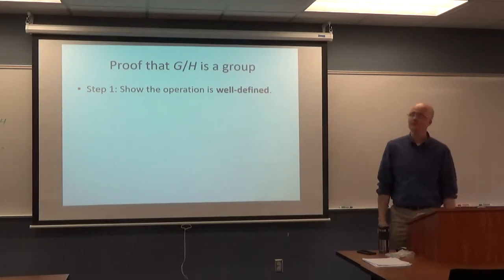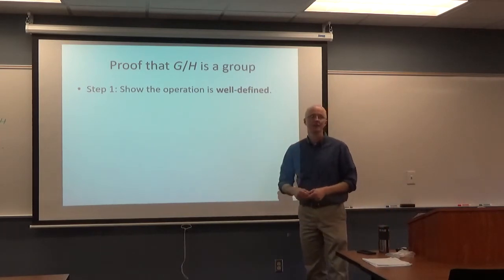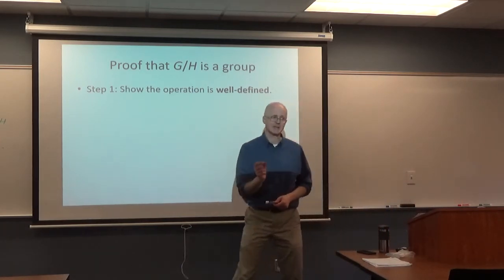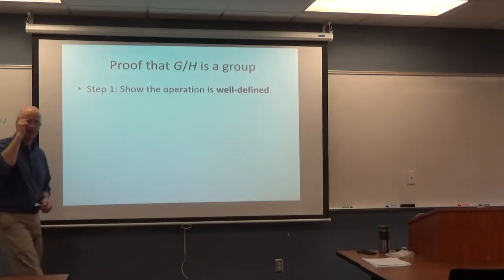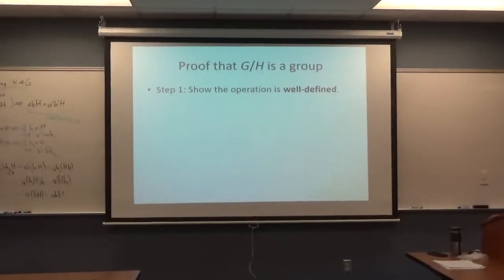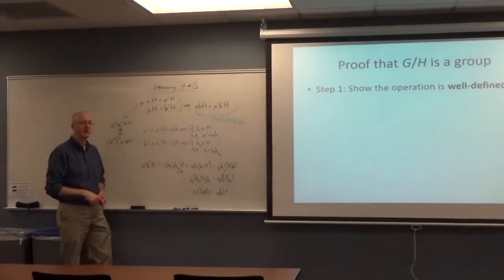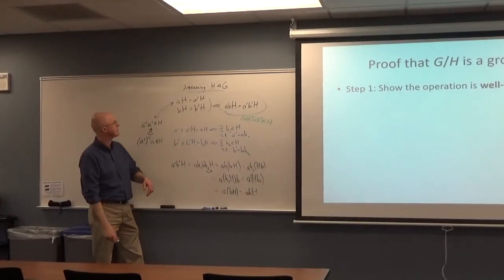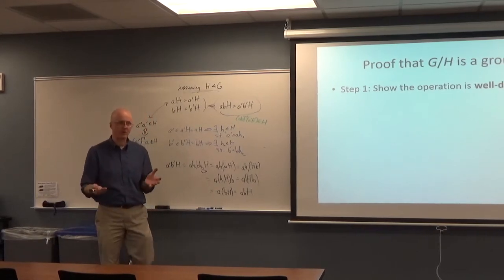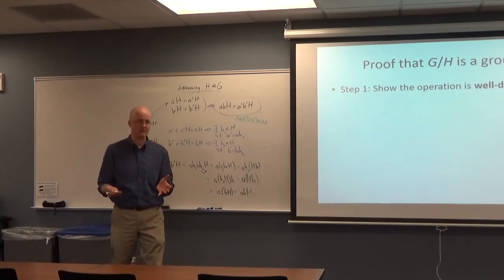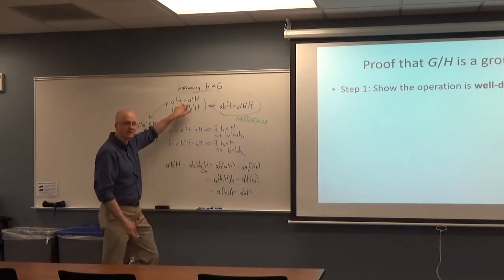Alright, once again, we should emphasize what it means for the group operation to be well-defined. You really want to get this — this is something I could very well test you on, quiz you on. You understand what it means for the group operation to be well-defined in the factor group. It's because a given coset can have more than one representative, more than one element that goes in front of it, yet still be the same left coset.